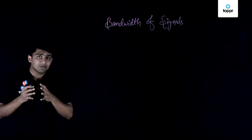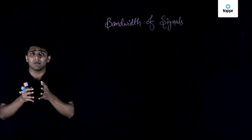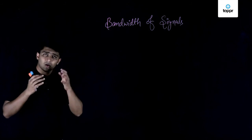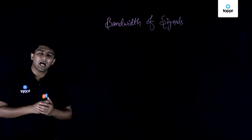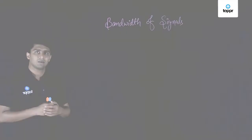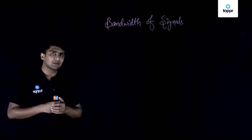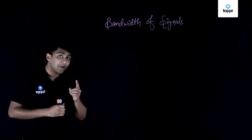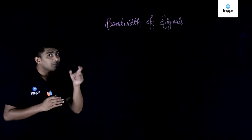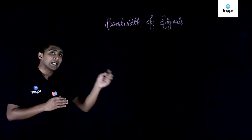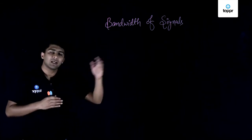To transfer the signal from one point to another point, it will be a various signal. Voice signal will have some particular frequency, video will have some particular frequency, and data which we are sending will have another set of frequencies. So from this what we understand is the type of communication system needed for a given signal depends on the band of frequencies — or the bandwidth of the signals.